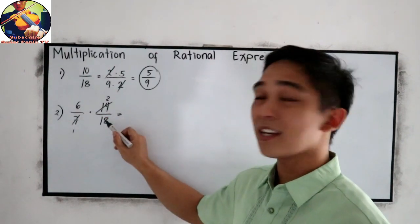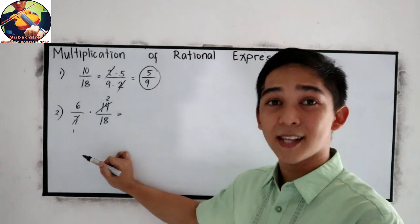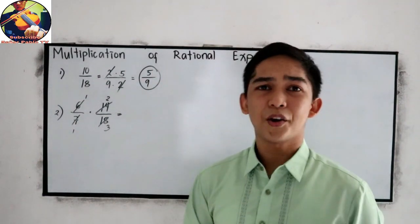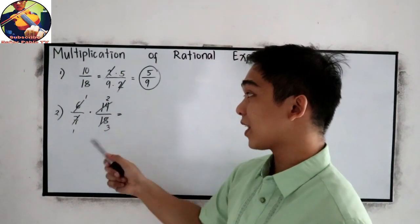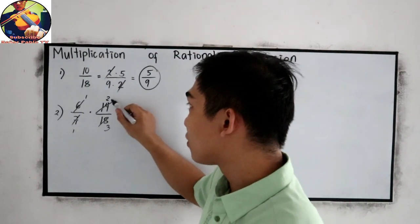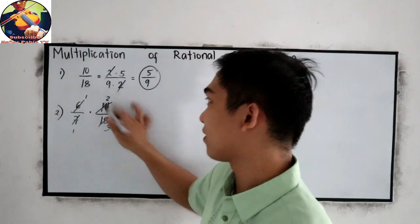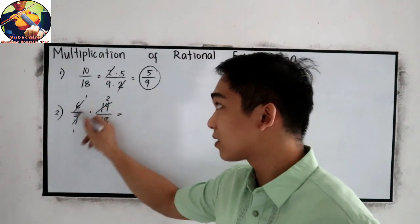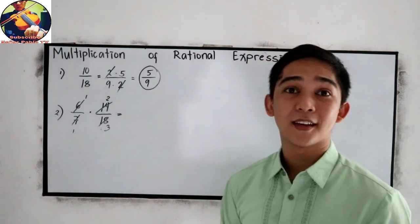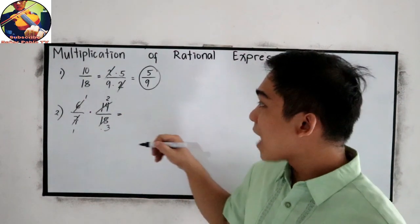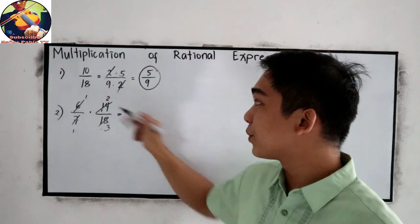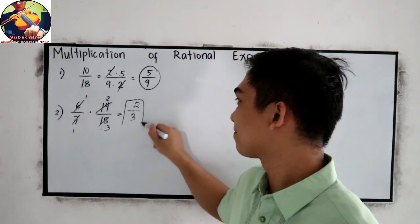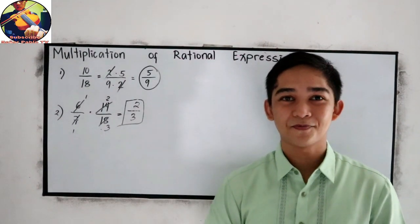Next, 6 and 18. Both numbers are divisible by 6, so this will become 1 and this will become 3. Or if you want, get the factors of 14 and 18. For 14, that's 2 times 7. Cancel 7 and 7, that will become 2. For 6 and 18, factors of 18 are 6 times 3, so cancel 6 and 6. You can explore different techniques. Now simplify. 1 times 2, that is 2, over 1 times 3, that is 3. This will be our final answer, 2 over 3.